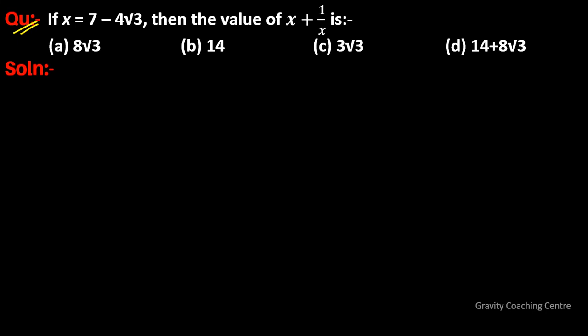Question: if x equals 7 minus 4 root 3, then find the value of x plus 1 upon x. Given that x is equal to 7 minus 4 root 3, and 1 upon x is equal to 1 upon 7 minus 4 root 3.